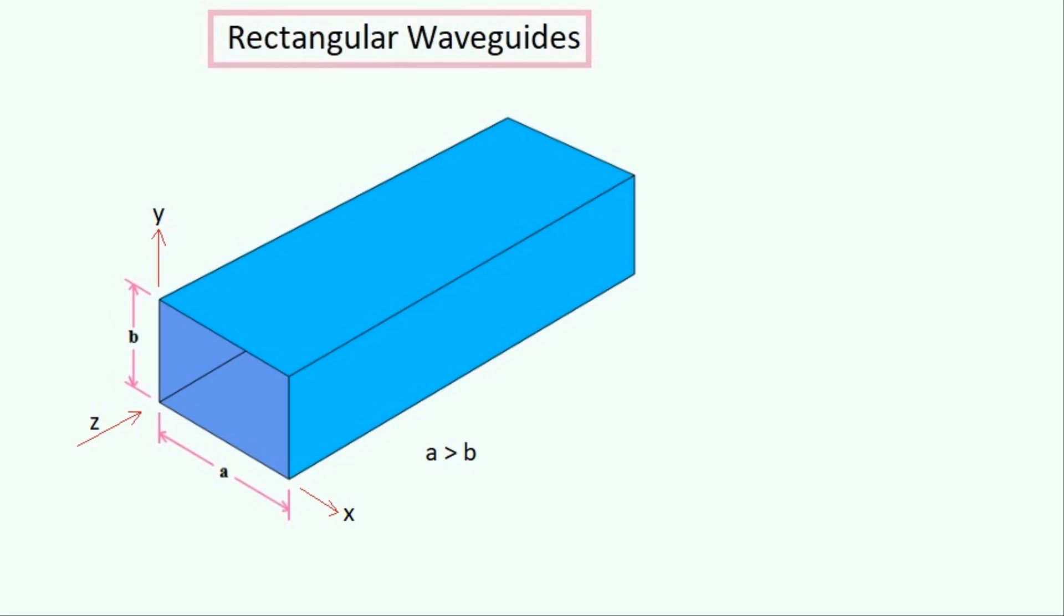So this is what a rectangular waveguide looks like. It is a hollow tube whose cross section is in the shape of a rectangle. By convention, a will be greater than b. a will be along the x-axis and b will be along the y-axis, and there will be no loss of generality when this is done.